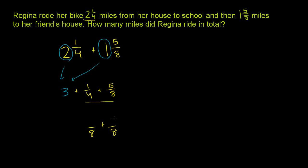Obviously 5/8 will still be 5/8. Now to go from a denominator of 4 to 8, you have to multiply the denominator by 2, so we also need to multiply the numerator by 2. So 1 times 2 is 2. And of course, we still have this 3 out there.